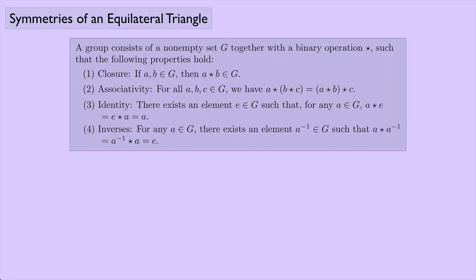Let's review what we know so far about groups. We have the definition of a group: a set G with a binary operation, with the properties closure, associativity, there's an identity, and every element has an inverse.